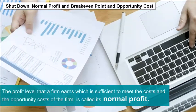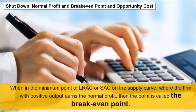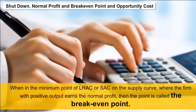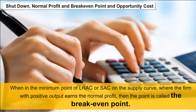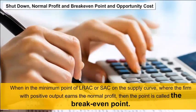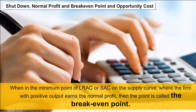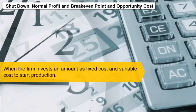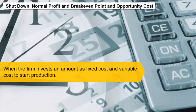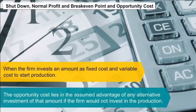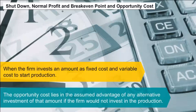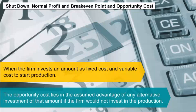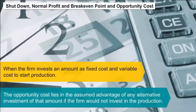When at the minimum point of LRAC or SAC on the supply curve, the firm with positive output earns the normal profit — that point is called the break-even point. Opportunity cost lies in the assumed advantage of any alternative investment of the fixed and variable costs, if the firm would not invest in the production.